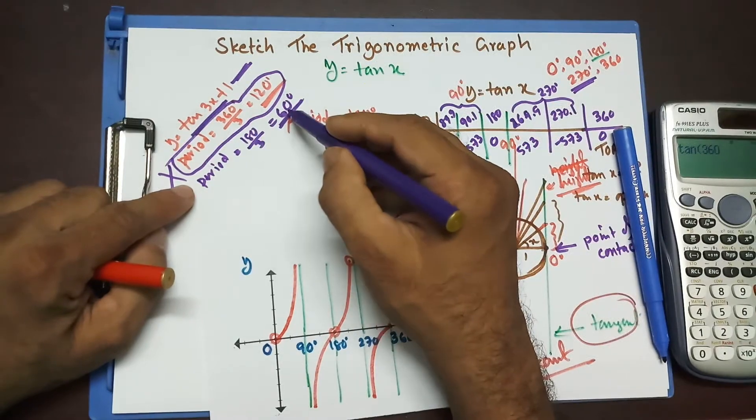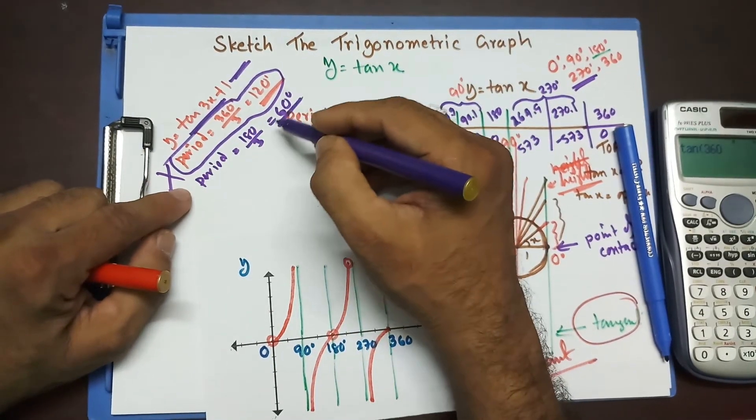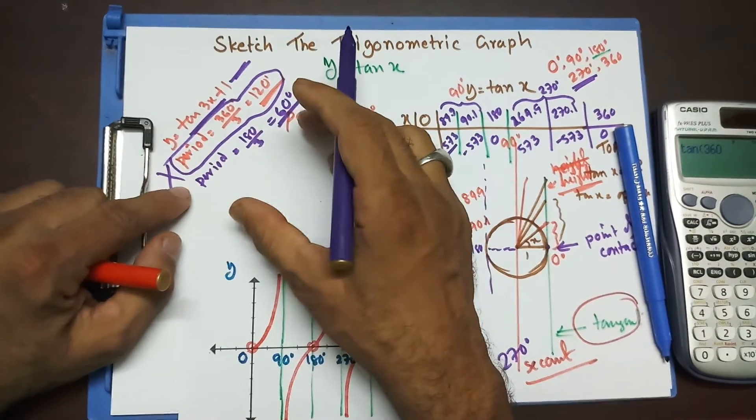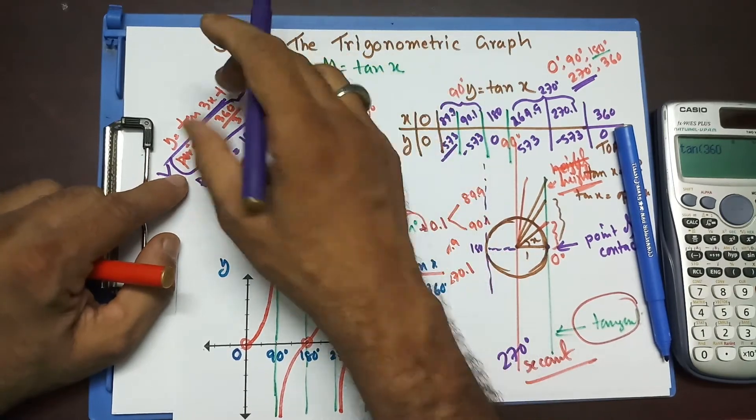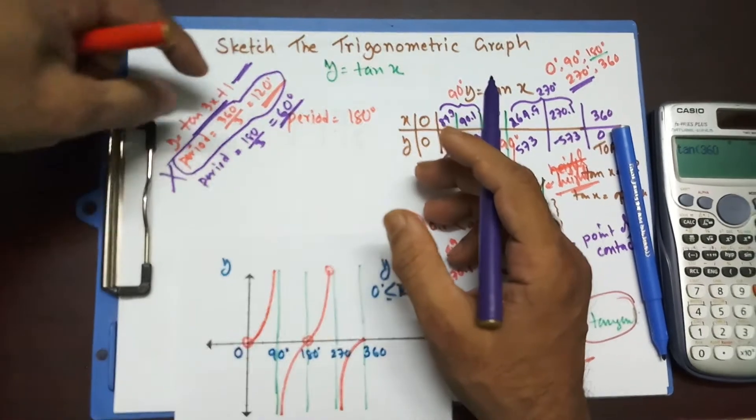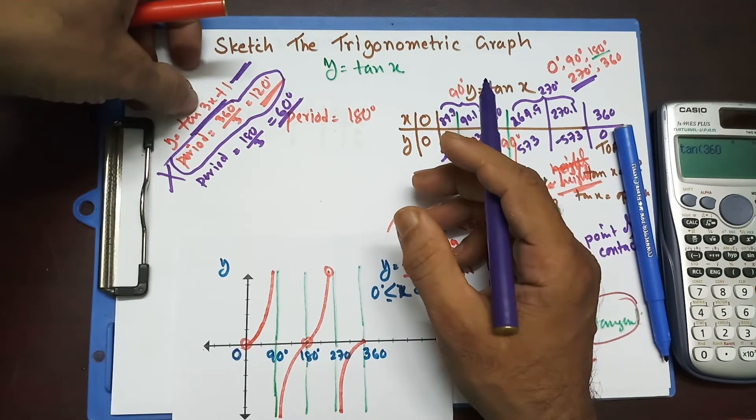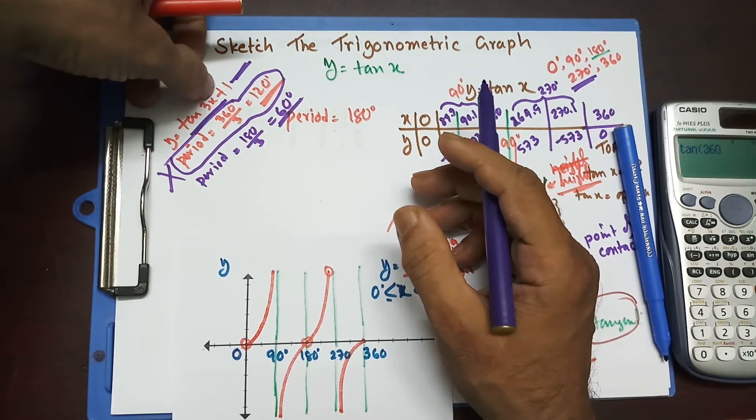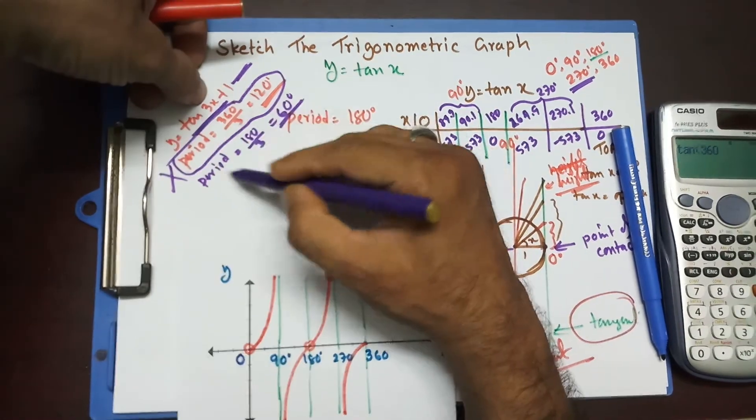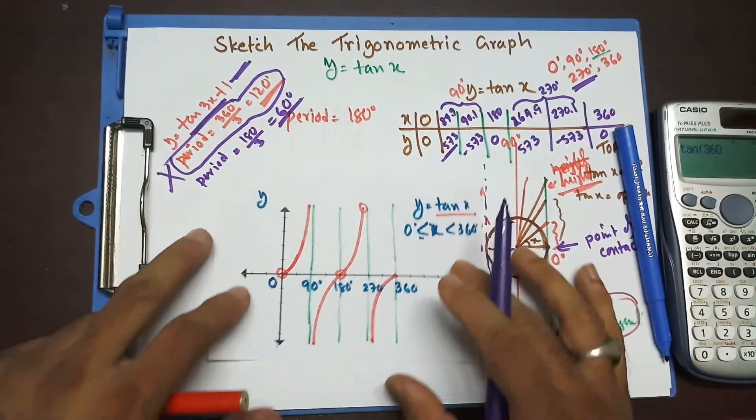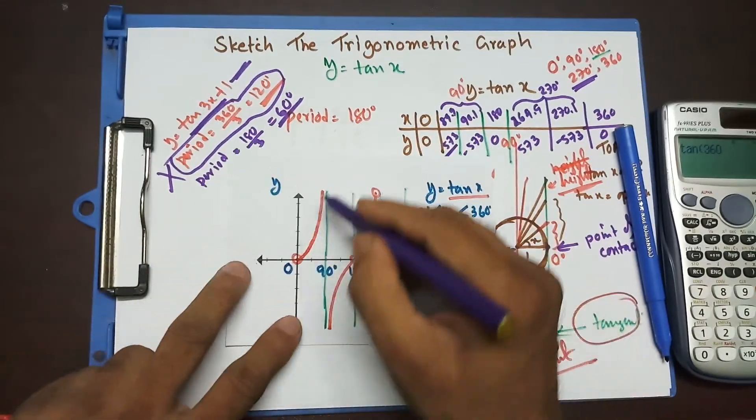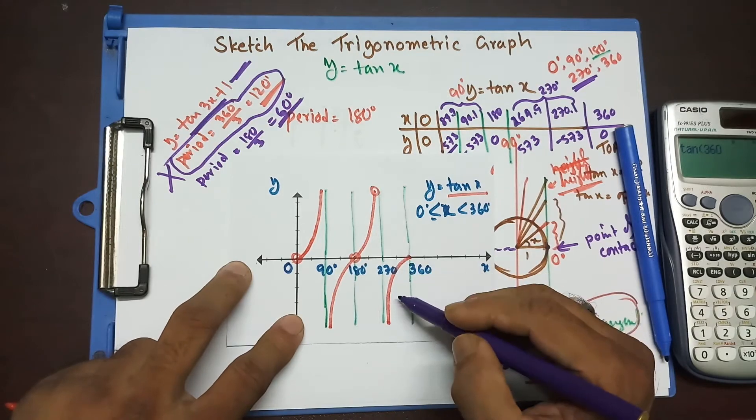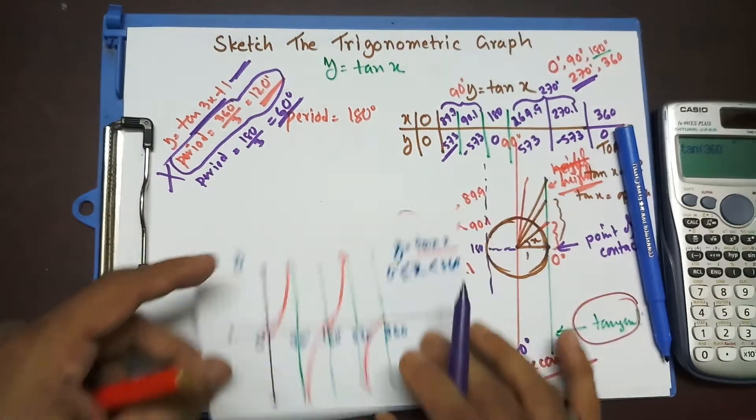Now, that's going to be our regular period of this graph. Within 180 degree, we used to have one cycle for the parental graph. But, when I have tan 3x plus 1, this kind of thing, then the regular period would be 60 degree. So, this is the common mistake made by those students. And it looks a little weird, but I think you're going to get it.